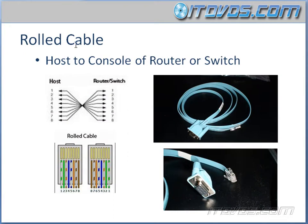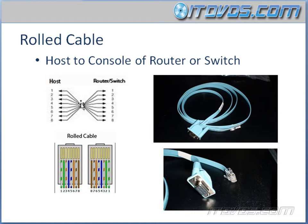The next type is a rolled cable. You're probably not going to make one, but you need to know what it is and how it's wired. When you buy a Cisco switch or router, you get this cable — it has a console port at one end and a normal RJ45 connector at the other, and is used to console into a Cisco router or switch. The ends are complete opposites: the first wire at one end goes to the eighth position at the other, the second to the seventh, and so on. The colors aren't critical, but that's how it looks.